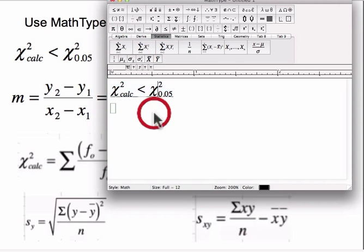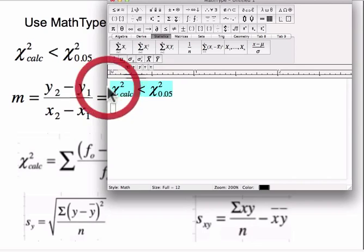You can copy and paste into a Word document, or even take a screenshot if you need to put it in some sort of other document as well. So, okay, that's the chi-squared one there.